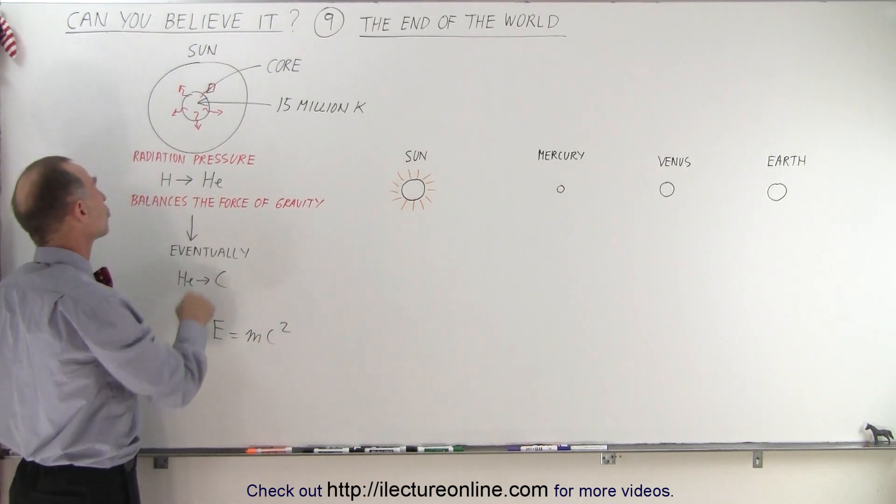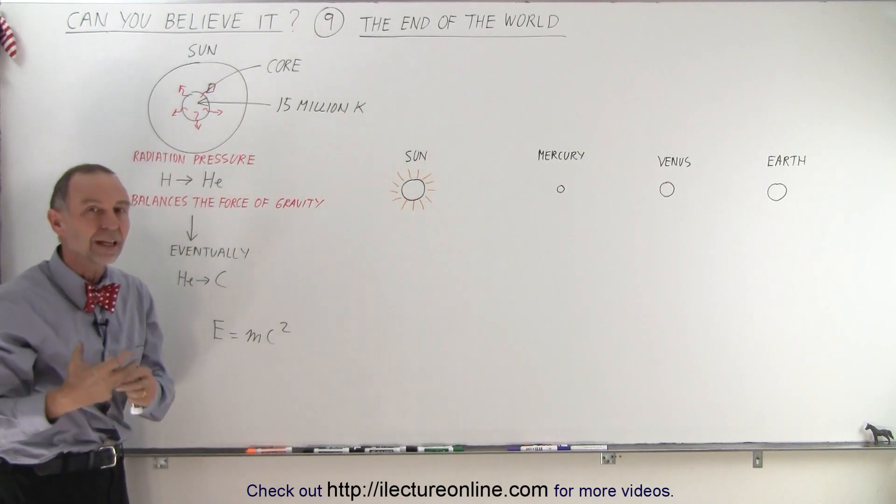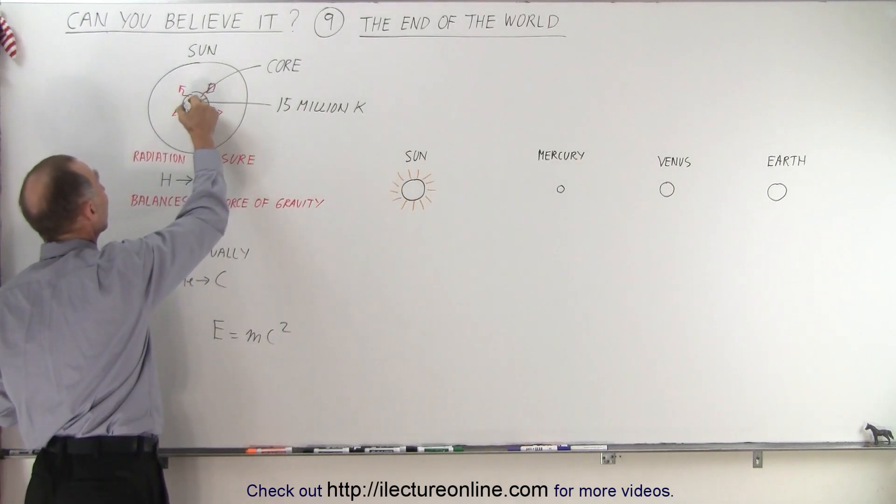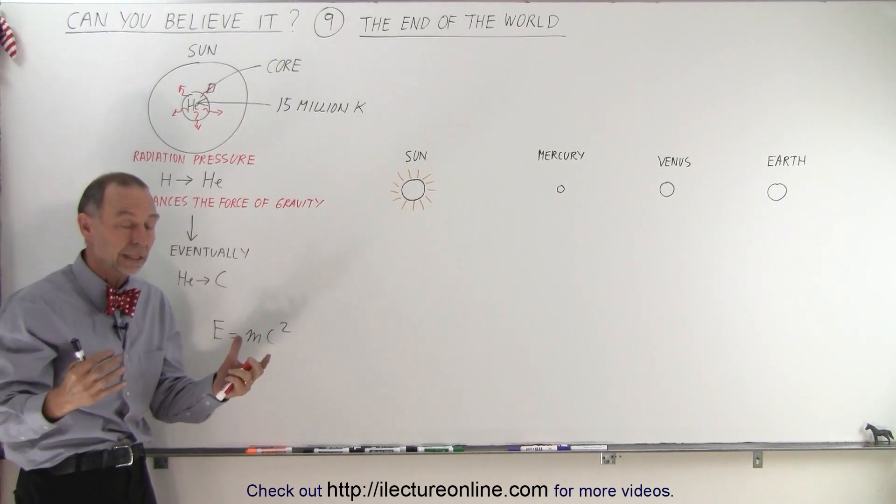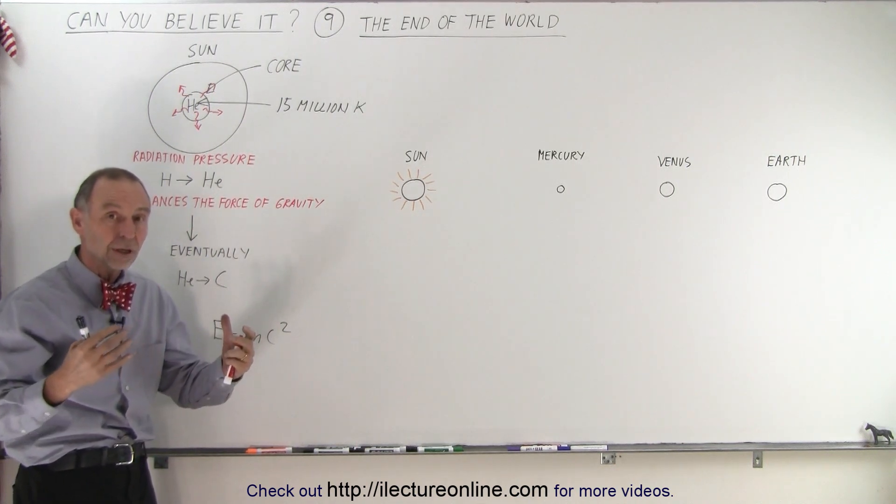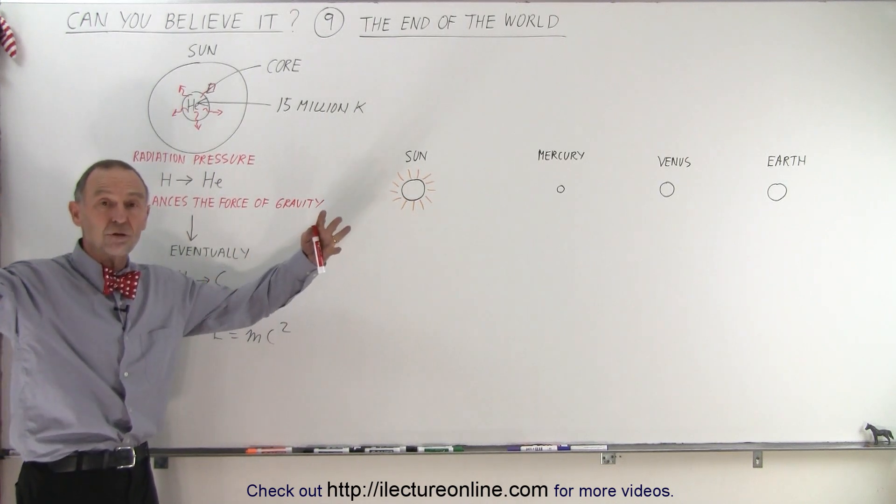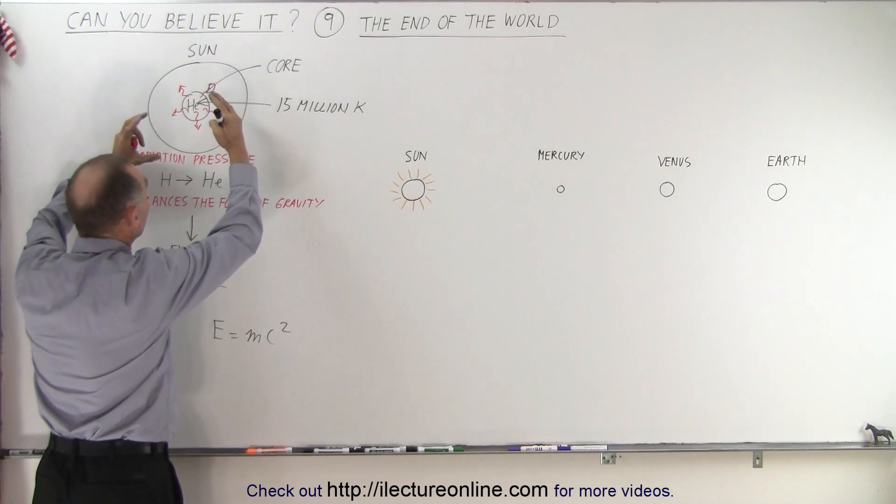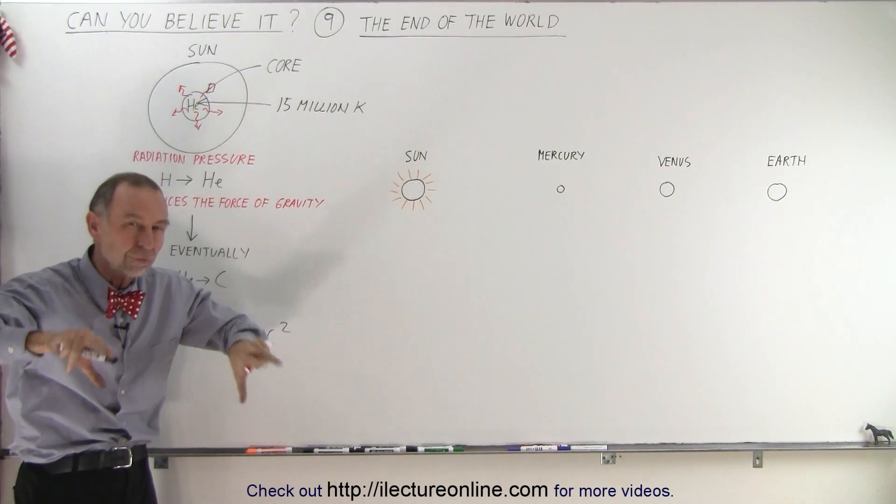But one day in the future the core will completely exhaust its available hydrogen and the entire core will have been turned into helium. And then of course this process will stop. As soon as that process stops the radiation pressure is no longer what it used to be and the gravitational forces begin to win over. And so what happens is the core begins to collapse because there's not enough energy being produced to push against the force of gravity.